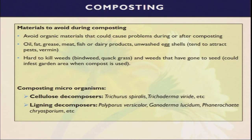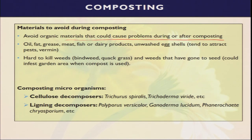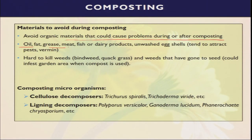Some organic materials cause problems during or after composting. There are some weeds or plants grown in areas with lots of heavy metals — phytoremediation plants can absorb heavy metals into their tissues. If we use this type of biomass for our composting, these heavy metals can contaminate our organic field. Similarly, materials with too much oil, meat products, fish products, dairy products, and unwashed egg shells are very tough to decompose. They also attract different types of pests, causing deterioration effects on human health. We have to avoid these types of materials.